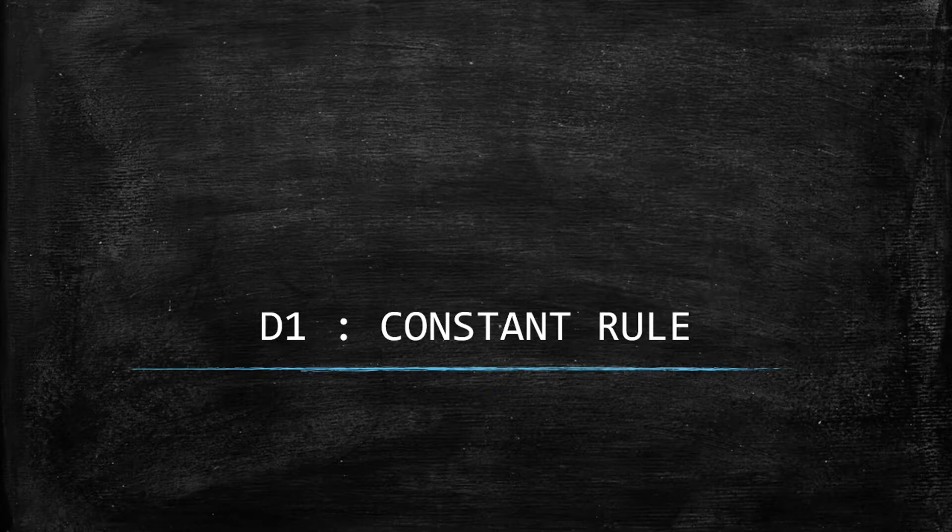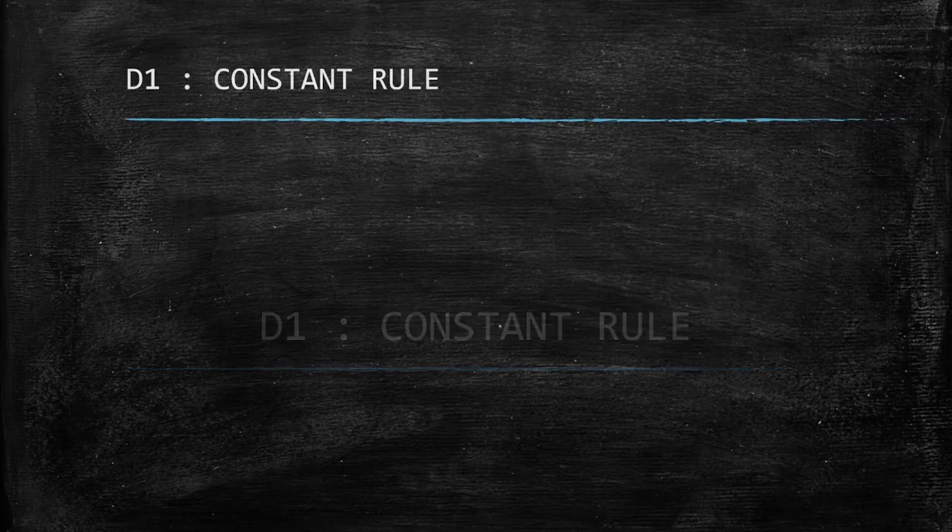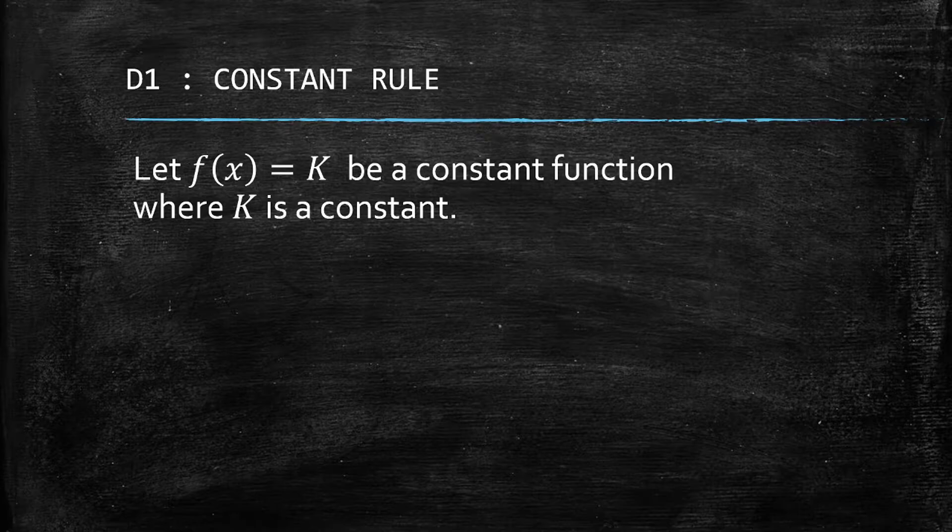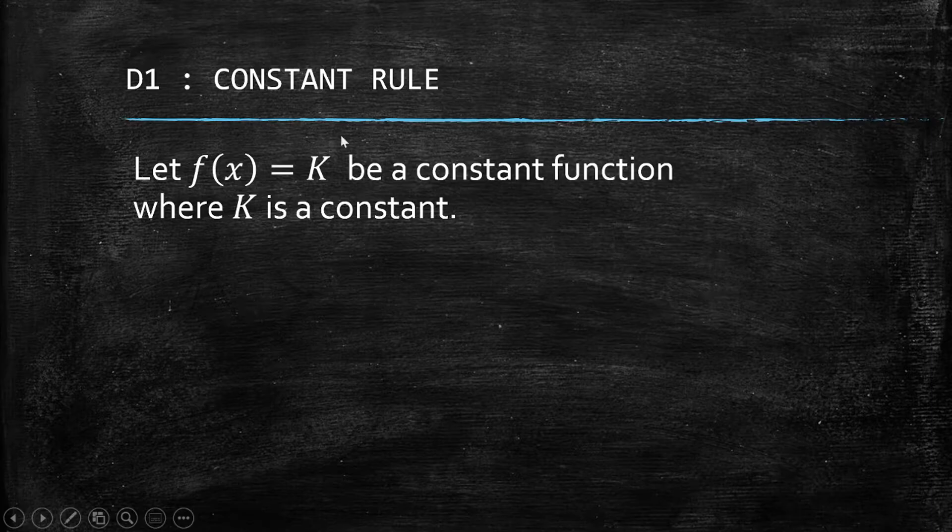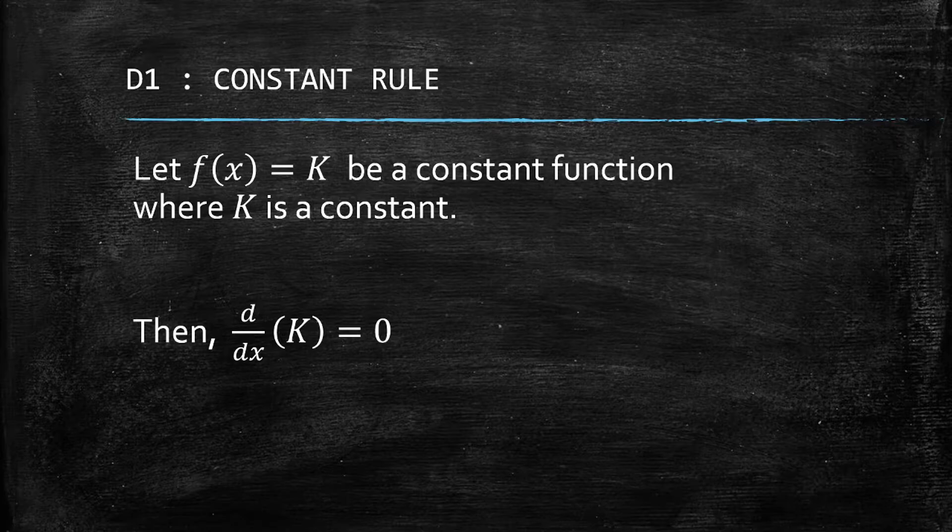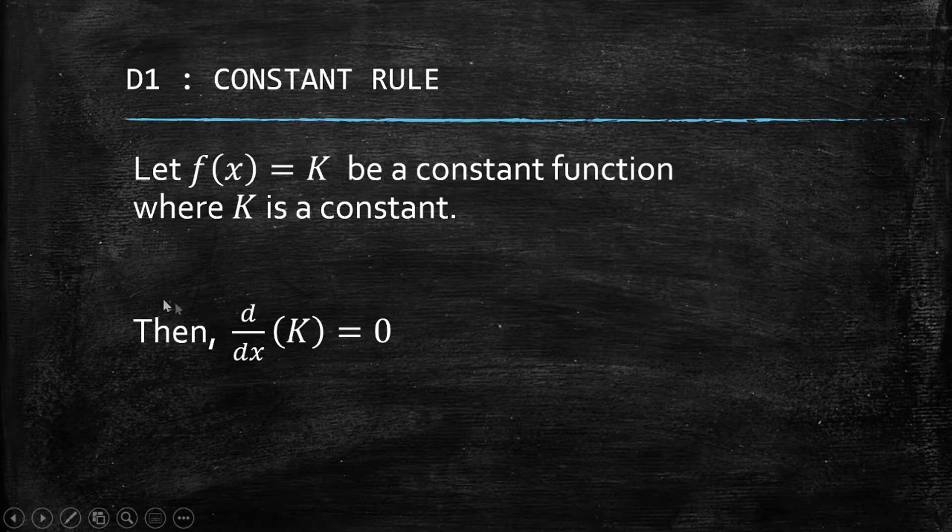D1 is called the Constant Rule. So what does the constant rule say? If we have a function f(x) equals K, and it is a constant function where K is actually a constant, then the derivative of this function K equals to K is just zero.